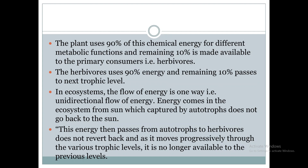The plant uses 90% of the chemical energy for different metabolic functions. Out of 100% energy absorbed by the plant, 90% is used for metabolic functions and the remaining 10% is made available to primary consumers. Primary consumers, that is herbivores, utilize 90% of energy and the remaining 10% is passed to the next trophic level — secondary consumers, or carnivores. Again, from secondary consumers, 90% energy is consumed and 10% energy is transmitted to the next level. In this way, the energy transmission continues.